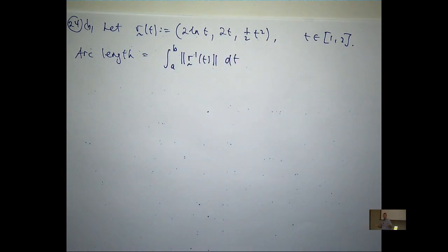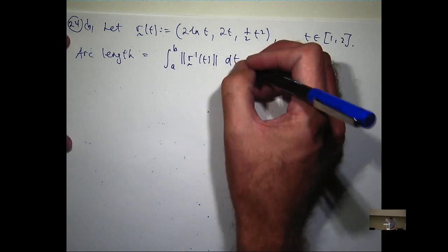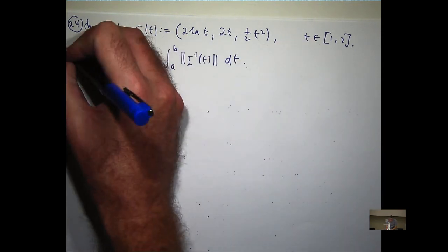All right, so here our a would be 1, our b would be 2, and our vector function is written up the top. So let's call the arc length L.